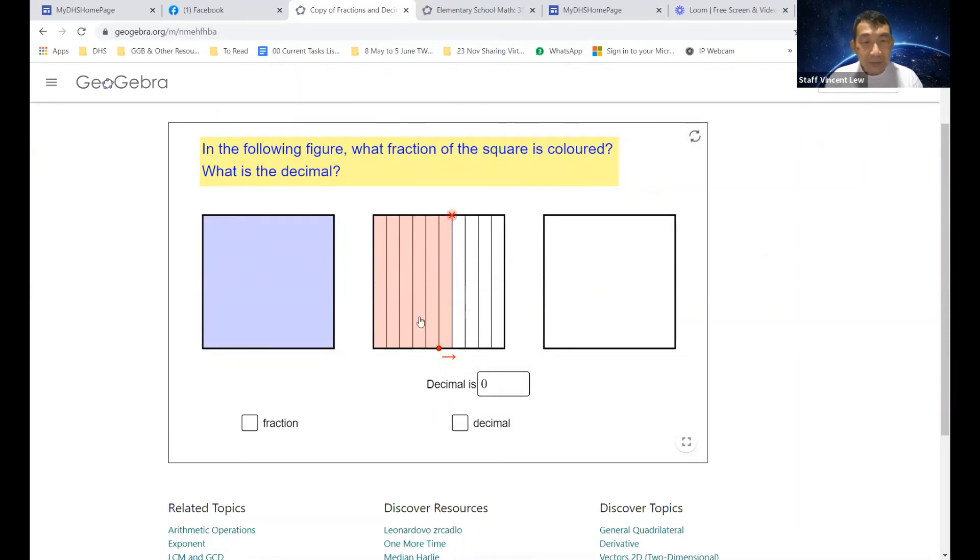And the students will answer, oh the fraction is actually one two three four five six, so it's six over ten. So the fraction is one and six over ten. Yes, so what is the decimal? The decimal will be one point six. So now press enter and we're going to check whether this is correct. Yay, answer is correct.